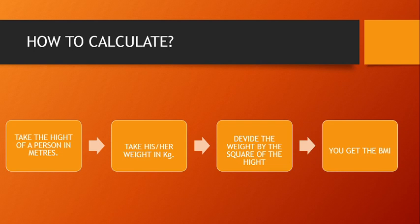दूसरी चीज हमें चाहिए उसका वेट, उसका भार किलोग्राम में। जब यह दोनों data available हों, तो बस एक आसान-सी calculation करनी है: divide the weight by the square of the height. Weight किलोग्राम में लेते हैं और उसे height के square से divide करते हैं — height मीटर में। जो result निकलेगा, वो उस person का BMI होगा।